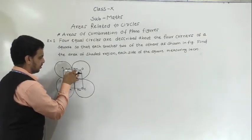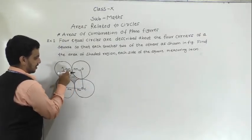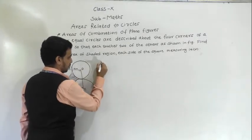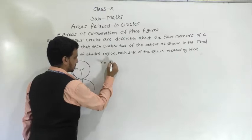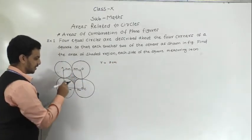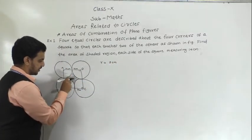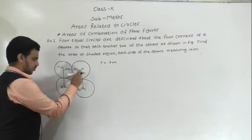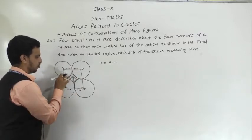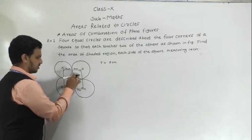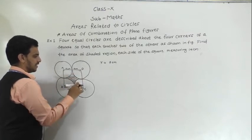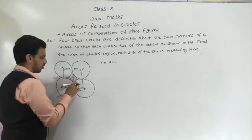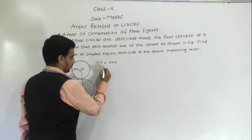Since the side of the square is 14 cm, the radius of each circle is clearly 7 cm. So R is equal to 7 cm. To find the area of the shaded region: area of shaded region equals area of square minus area of four quadrants. Each angle is 90 degrees, so they are quadrants.